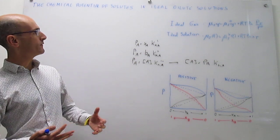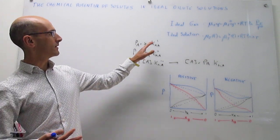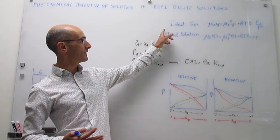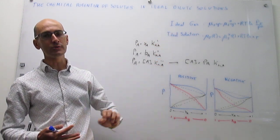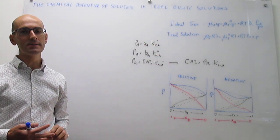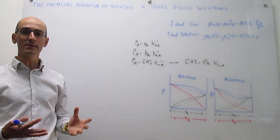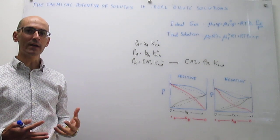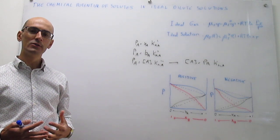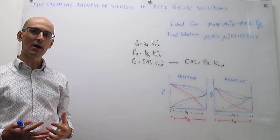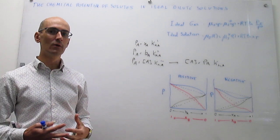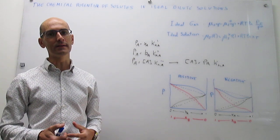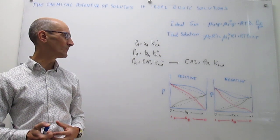So far we've learned how to calculate the chemical potential for an ideal gas and an ideal solution, and here in this video what we do is try to apply Henry's law to understand how to write the chemical potential for the solute in an ideal dilute solution.